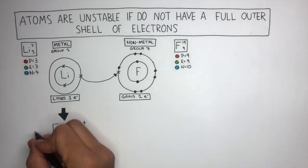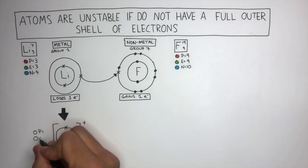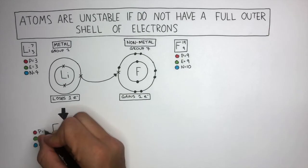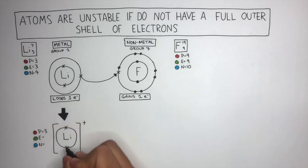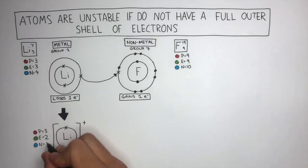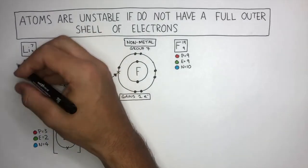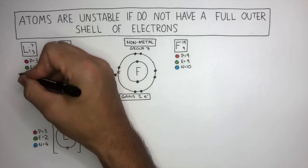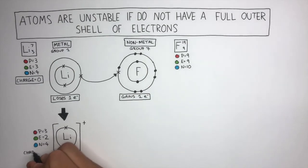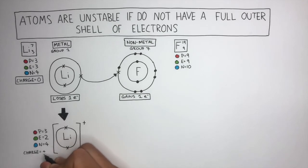To understand why lithium has a charge of 1 plus, let's take a look at the subatomic particles in this ion. Nothing has happened to the protons, so there are still 3 protons. Lithium has lost 1 electron, so there are now 2 electrons. Nothing has happened to the neutrons, so there are still 4 neutrons. The lithium atom has no charge because the 3 protons cancel out the 3 electrons, whereas the lithium ion has a charge of plus 1 because there are 3 protons and 2 electrons — the extra proton gives it a charge of plus 1.